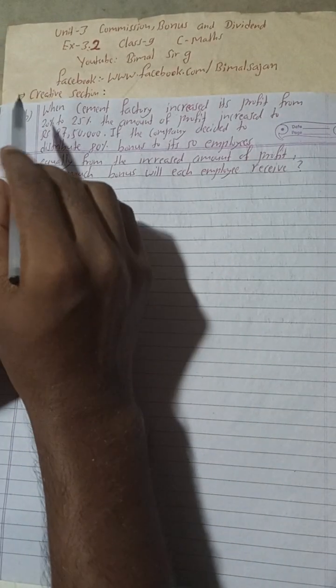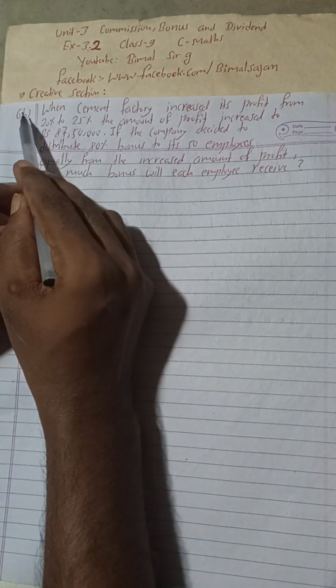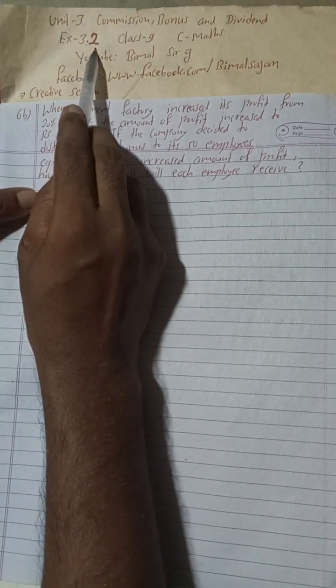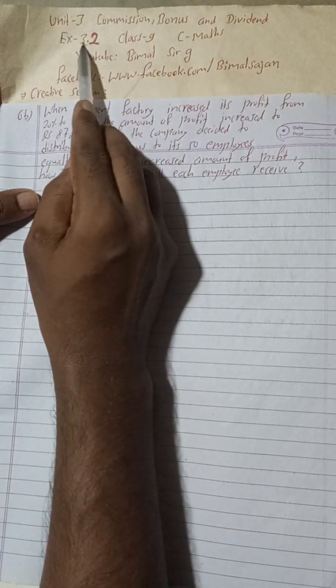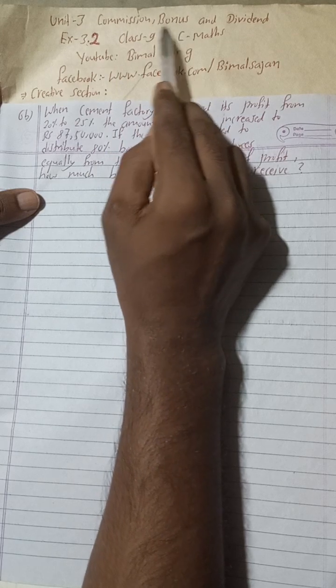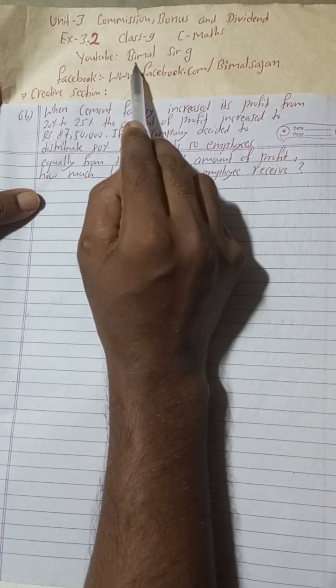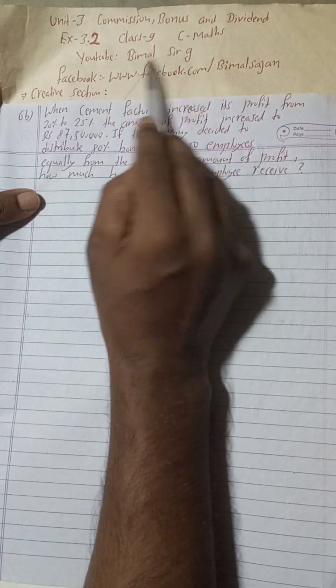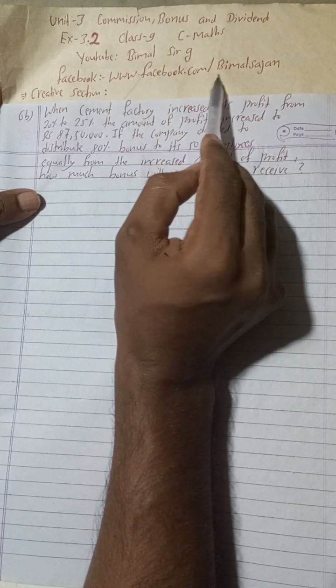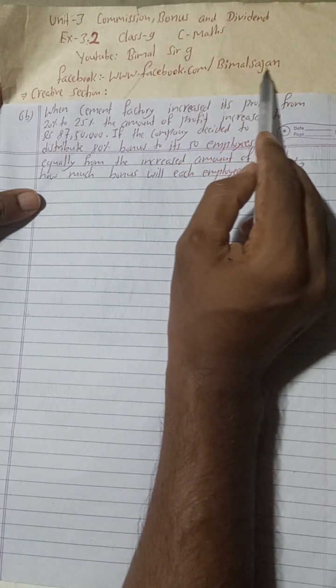Hi everybody, welcome back to Bimal Sarji's YouTube channel. This is the last question of 6b, creative section, Exercise 3.2, Unit 3 — Commission, Bonus and Dividend. Exercise 3.3 on dividend is already completed; this is 3.2 on bonus. You can check the playlist of Bimal Sarji and subscribe to this YouTube channel.